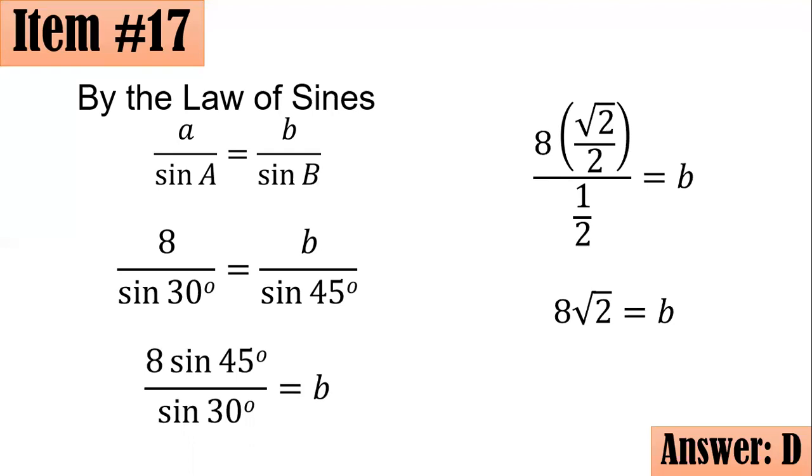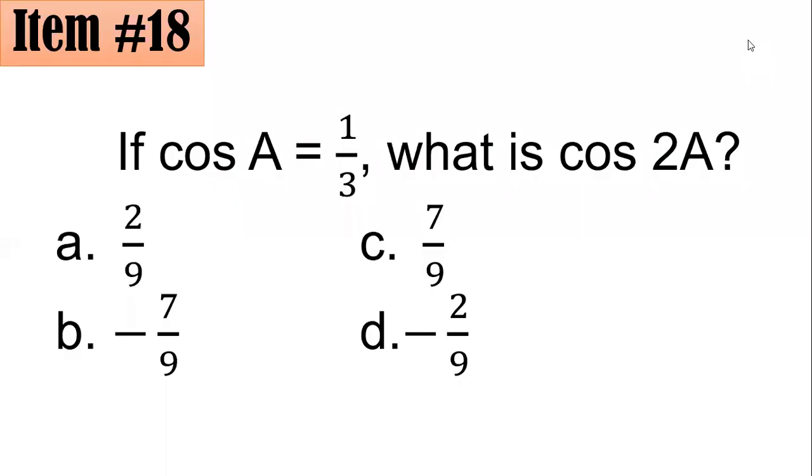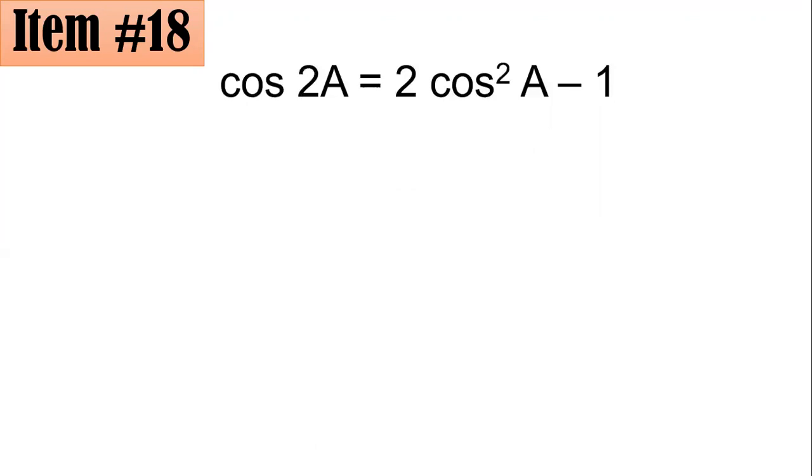Number 18. If cosine A equals 1 third, what is cosine 2A? Is it 2 ninths, negative 7 ninths, 7 ninths, or negative 2 ninths? So I hope you could still recall your double angle formulas. For cosine 2A, it's actually equal to 2 cosine squared A minus 1. I utilize this. There are actually three versions. There are three formulas for cosine 2A. But I will utilize this one because we know the value of cosine A.